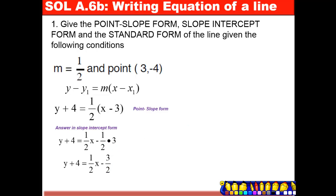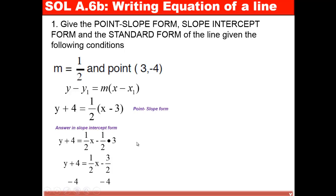Next, we remove the 4 on the left by subtracting 4 on both sides. This cancels out, and we just have to compute negative 3 over 2 minus 4, which gives negative 11 over 2. So this will be our slope-intercept form.